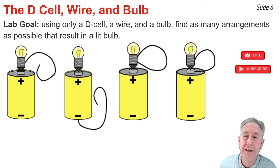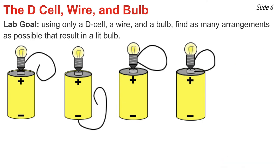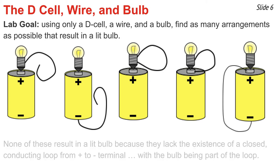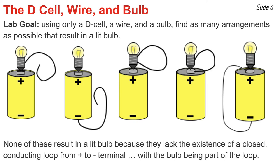Once students realize they need to take that wire and form a loop that goes from the positive to the negative terminal, they might try this one here, which tends to burn their thumb. This doesn't work because the loop goes from positive to negative terminal, but the light bulb is not a part of this loop. What all of these arrangements have in common is that they lack the existence of a closed conducting loop that extends from the positive to the negative terminal, with the light bulb being part of that loop.